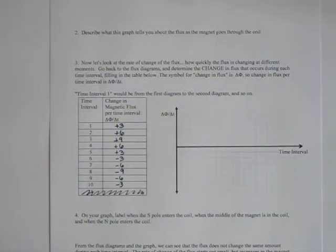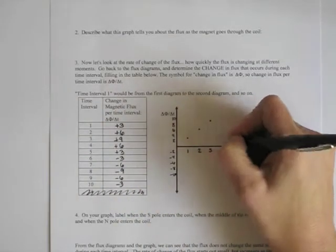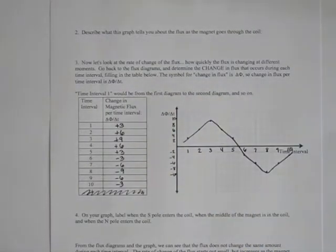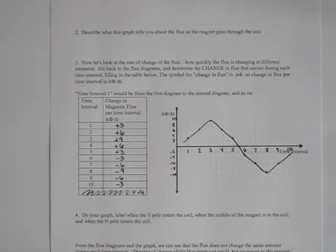Go ahead now and plot your graph. When your graph is completed it should look like this. Moving on to number four — interpreting the graph — label on your graph when the south pole enters the coil, when the middle of the magnet is in the coil, and when the north pole enters the coil. Pause the video and identify those points on your graph.